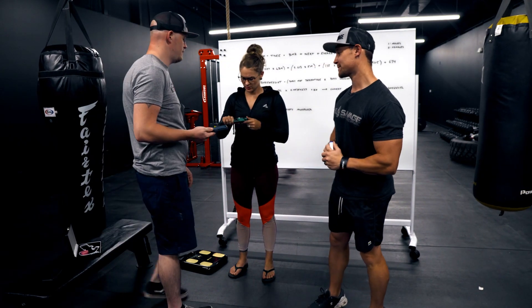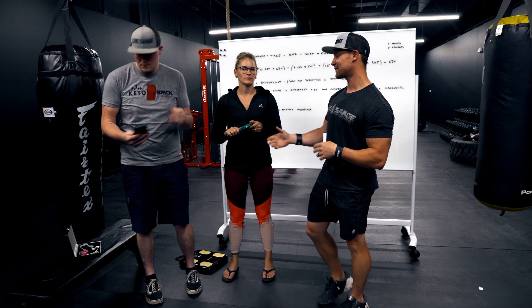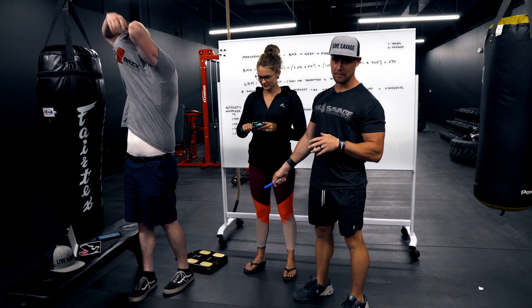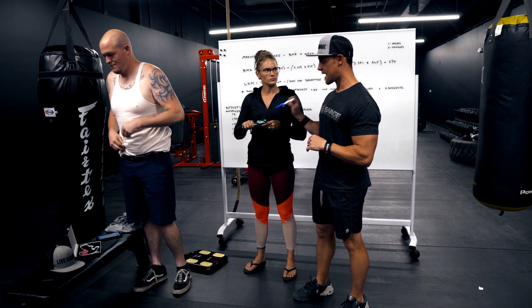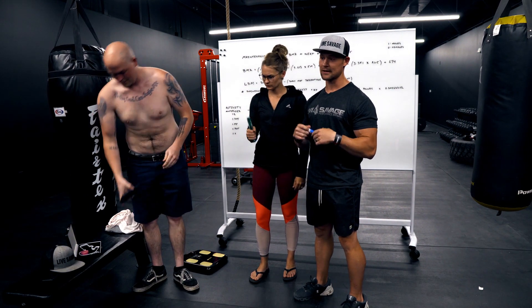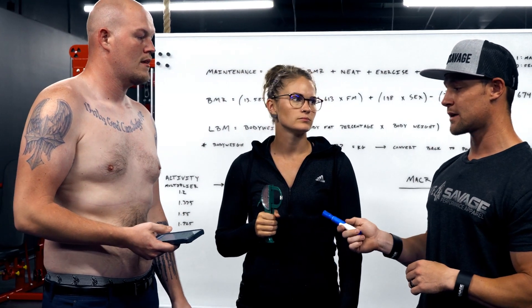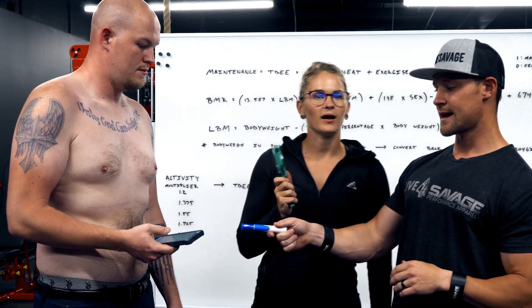All right Dylan, get naked, bro. Not fully naked. I want to keep this G-rated, but take shirt off. So we have an in-body machine, one of the at-home in-body machines. We're going to test his body fat with that. We're also going to do a caliper test, and we're going to use the Jackson Pollock seven-point test. There's a three-point test, there's like Navy test which is like a tape measure on your neck and waist. This is a really good accurate way to do it if you're using the calipers.